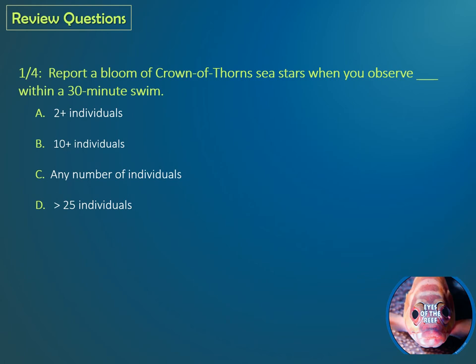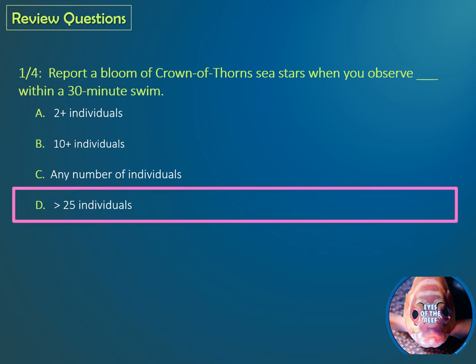Question one: Report a bloom of Crown of Thorns Seastars when you observe blank within a 30-minute swim. A: two or more individuals. B: 10 or more individuals. C: any number of individuals. D: more than 25 individuals. If you said D — more than 25 individuals — you're correct.